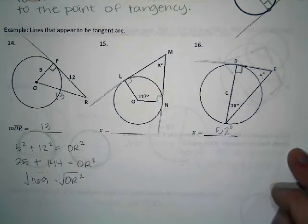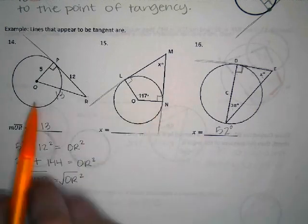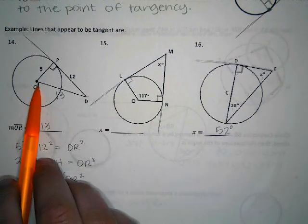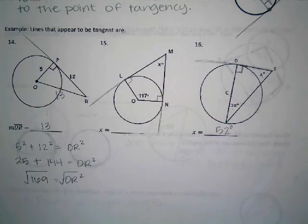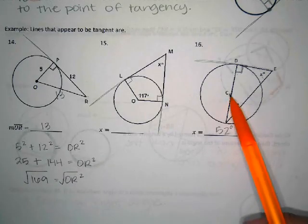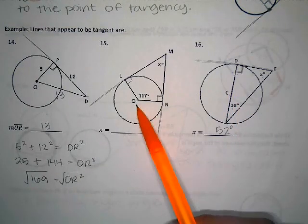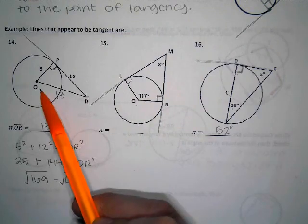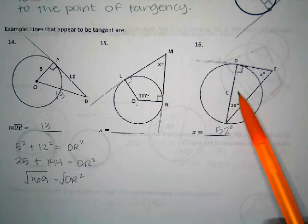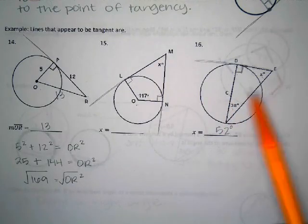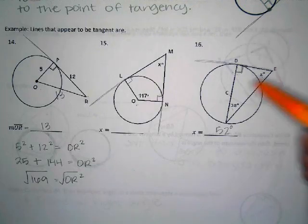When you see pictures of circles being drawn, anytime they have a point that looks like it's in the center and it has a letter next to it, that's very intentional, because that's how you name a circle. They would call this circle over here circle C - it's named for the point that's in the center. This would be called circle O. Anytime you see a letter that looks like it's in the center of the circle, it is, and that point is considered to be the center of the circle.